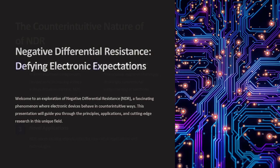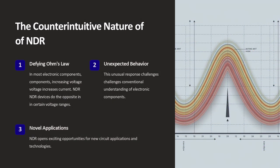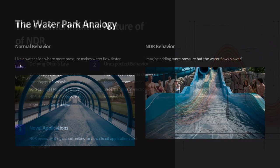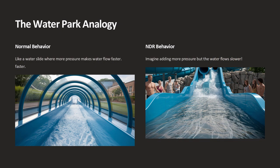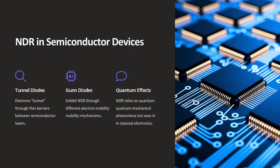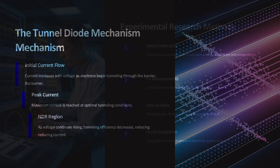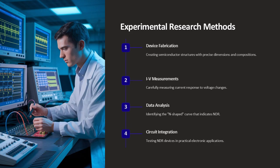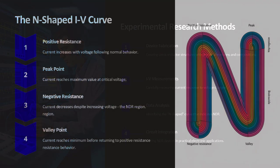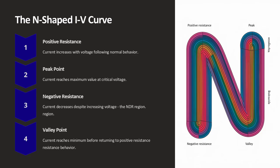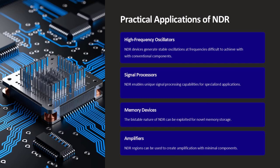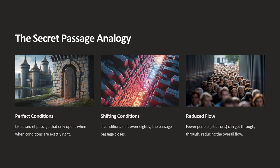Negative differential resistance, NDR, is a fascinating and somewhat counterintuitive phenomenon observed in certain electronic devices. In most electronic components, when you increase the voltage, the current also increases following Ohm's law. However, in devices exhibiting NDR, there is a specific range of voltage where increasing the voltage actually causes the current to decrease. This unusual behavior challenges our conventional understanding of how electronic components should work, and it opens up exciting opportunities for novel circuit applications.